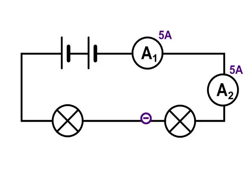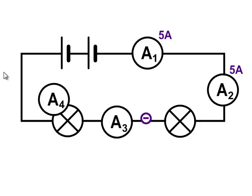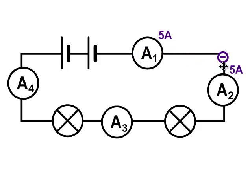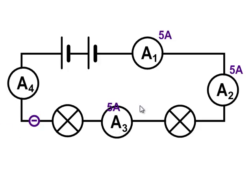Now we could continue adding ammeters anywhere in this series circuit — we could put an ammeter here, and an ammeter here. The electrons have to go through each part of the circuit, through each of those ammeters. So the current you would measure through these ammeters would be the same. If somebody asked you what's the current through ammeter A3, you could just say the current is 5 amps.